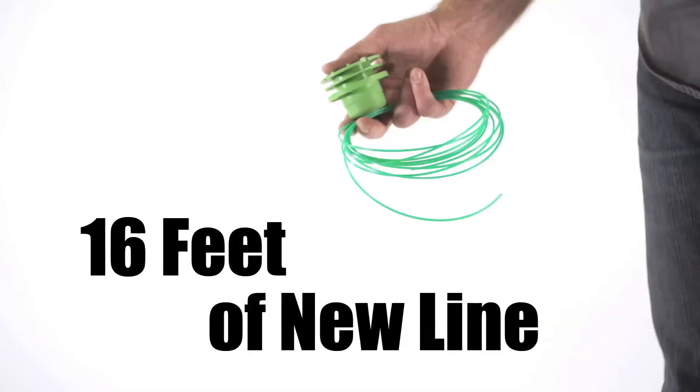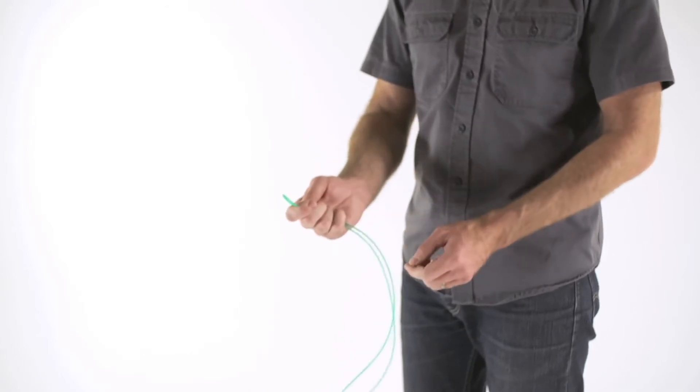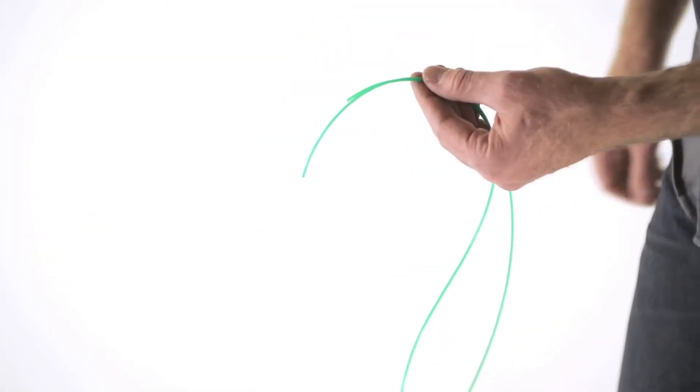Now, take about 16 feet of new cutting line and fold it in half. Adjust the line so that one end is 4 inches longer than the other.